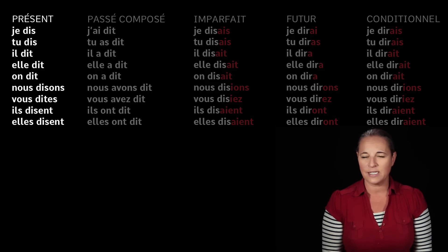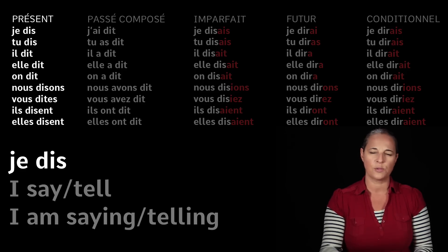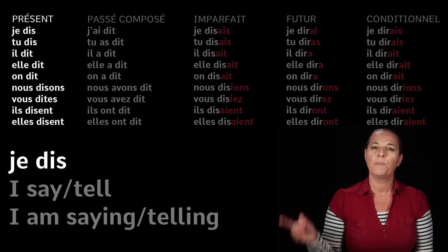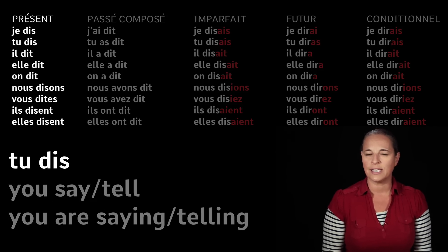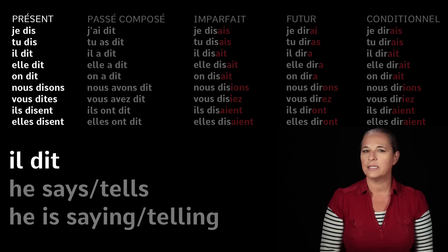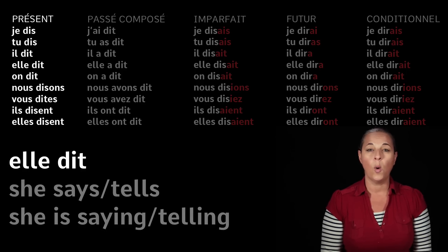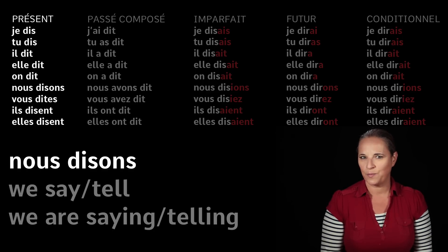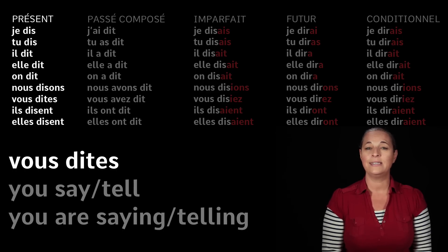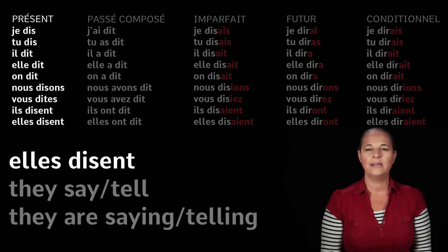When I say present tense, we are going to learn how to say 'I say' or 'I am saying'. It means both in French — we have only one way of saying these two things. Je dis — I say or I am saying. Tu dis — have a look at the endings, really important for third group verbs. Il dit, elle dit, on dit, nous disons, vous dites, ils disent, elles disent.